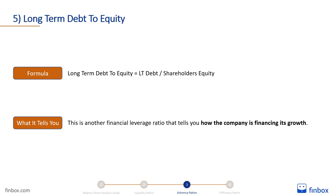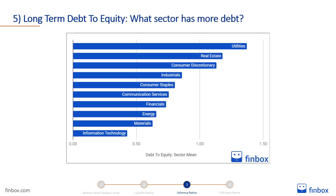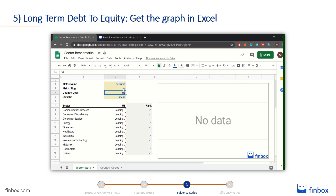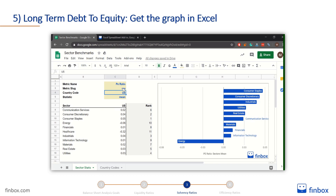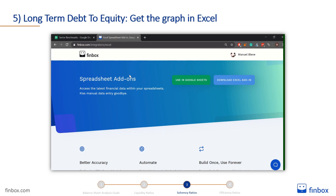High debt doesn't necessarily mean bad performance — you must consider all the other factors related to debt. What sector does the company operate in? Does the company generate enough cash flow to cover that debt? What is the company using that debt for? An easy way to evaluate a company's financial strength is to compare it to its sector. As of June 2020, the sectors with the highest debt-to-equity ratio are utilities, real estate, and consumer discretionary. You can have up-to-date stats and graphs like that directly in Excel or Google Spreadsheets with the Finbox Excel add-in — go to finbox.com/integrations/Excel to download it for free.